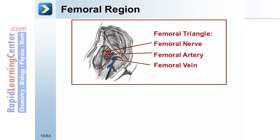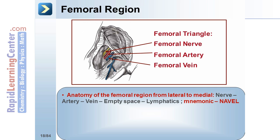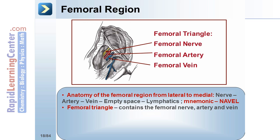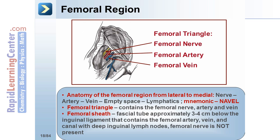The anatomy of the femoral region from lateral to medial is nerve, artery, vein, empty space, lymphatics. You can remember this with the mnemonic NAVEL. The femoral triangle contains the femoral nerve, artery, and vein. The femoral sheath is the fascial tube approximately three to four centimeters below the inguinal ligament that contains the femoral artery, vein, and canal with deep inguinal lymph nodes. The femoral nerve is not present in the femoral sheath.